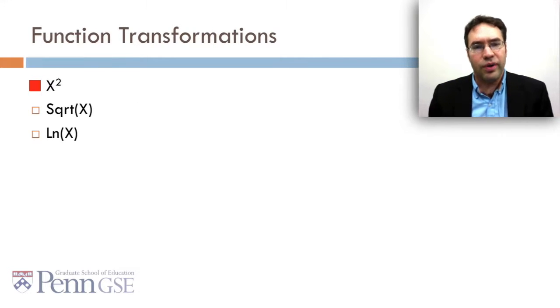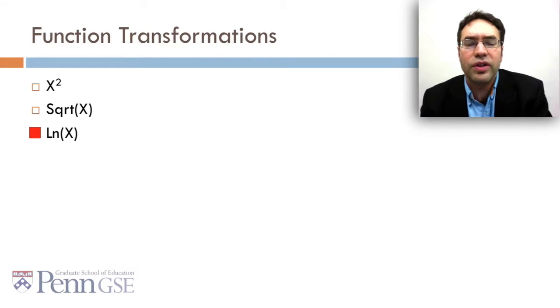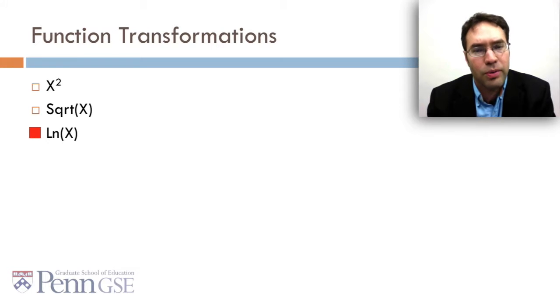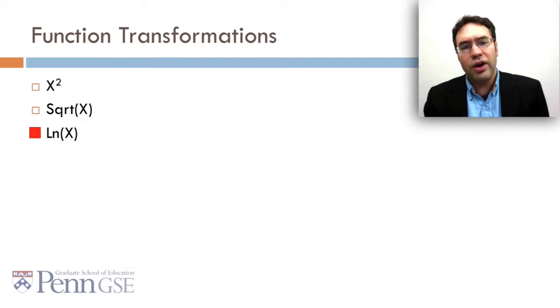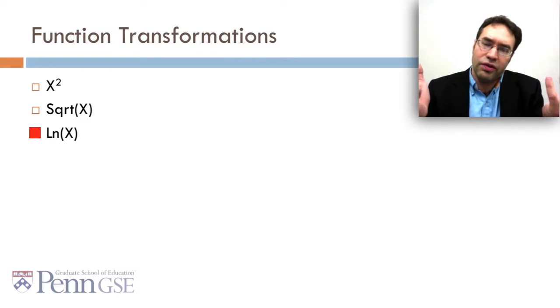Then there's function transformations: X squared, square root of X, the natural log of X. You'll see people doing these things, especially when they think the data is non-normal, which as we've talked about before doesn't matter quite as much with data mining most of the time, but can still be useful to think about, especially if you're doing something like linear regression.